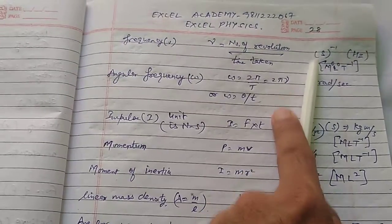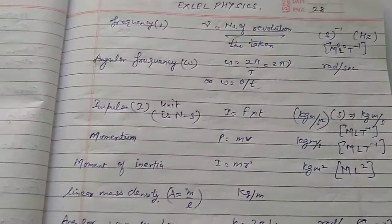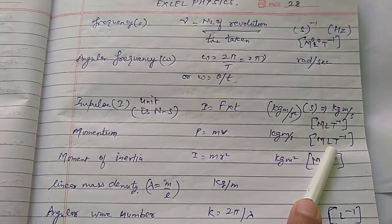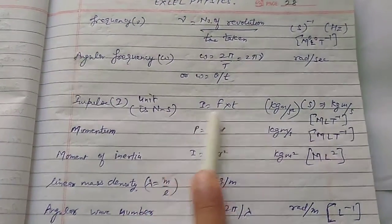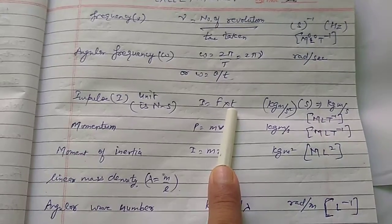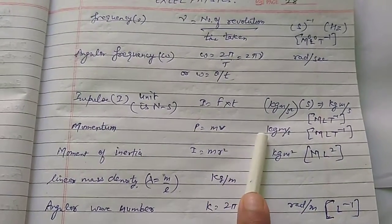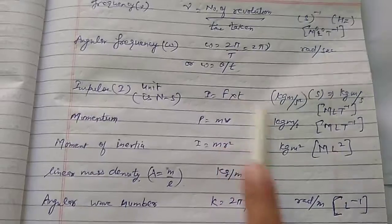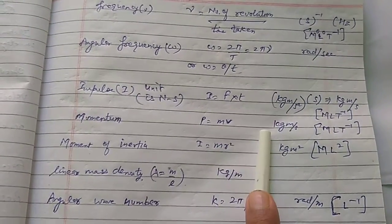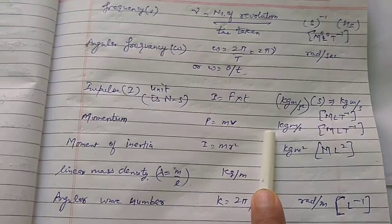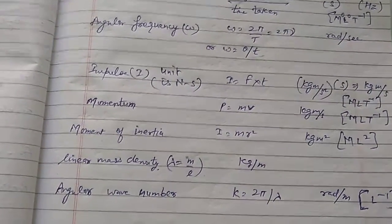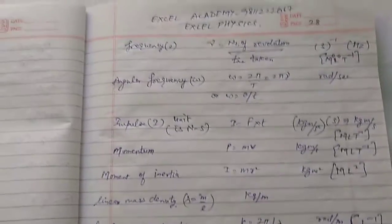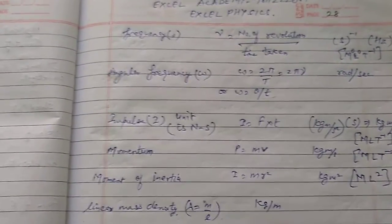Frequency is number of revolutions upon time taken. Number has no unit so it is dimensionless, and time unit is second, giving dimension T⁻¹. Frequency and angular frequency have different units (s⁻¹ and rad/s respectively) but the same dimension T⁻¹. Similarly, impulse and momentum have different units but the same dimension. Angle is dimensionless: M⁰L⁰T⁰.